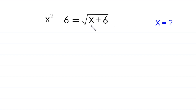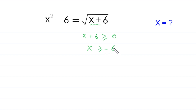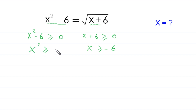Since x plus 6 is under a square root, x plus 6 must be greater than or equal to 0, which implies x must be greater than or equal to negative 6. Also, x squared minus 6 must be greater than or equal to 0, which implies x squared must be greater than or equal to 6. So we have two conditions for this equation.